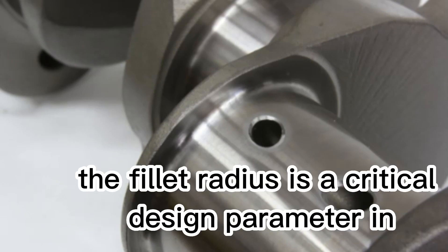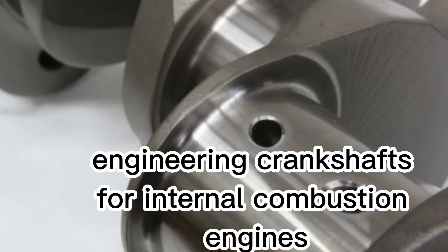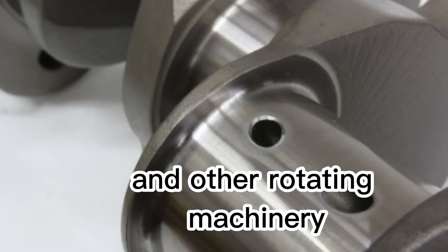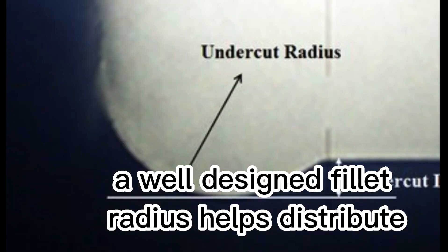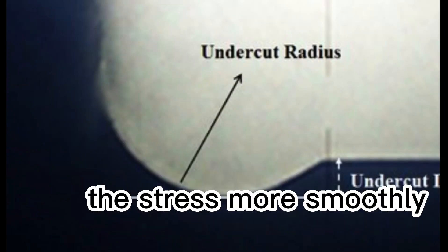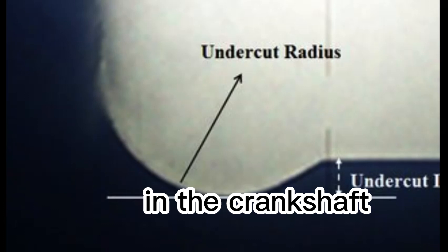The fillet radius is a critical design parameter in engineering crankshafts for internal combustion engines and other rotating machinery. A well-designed fillet radius helps distribute the stress more smoothly, reducing the likelihood of fatigue failure in the crankshaft.